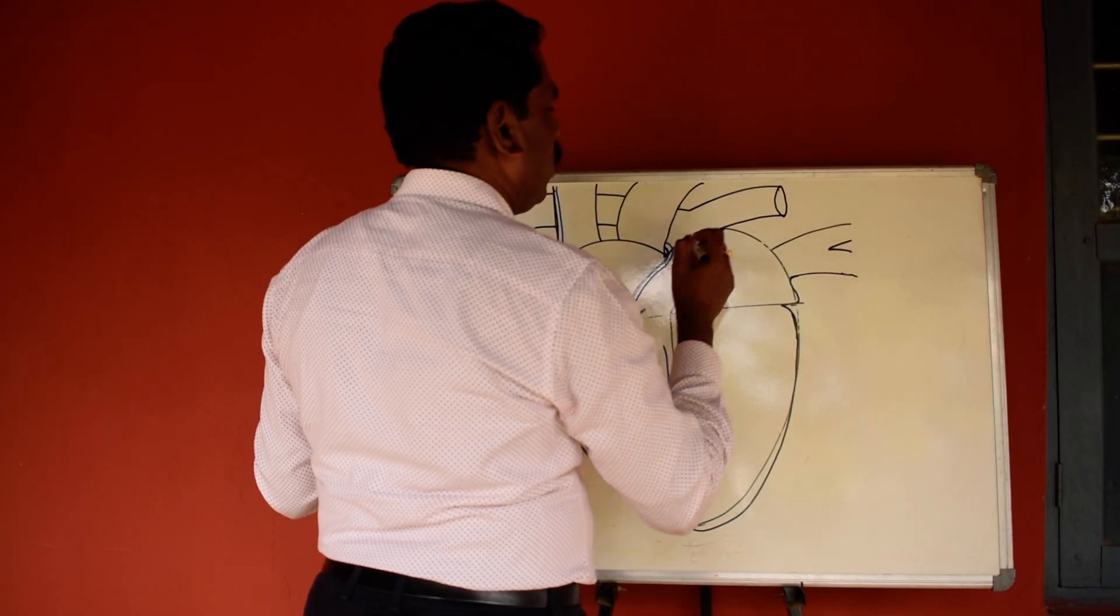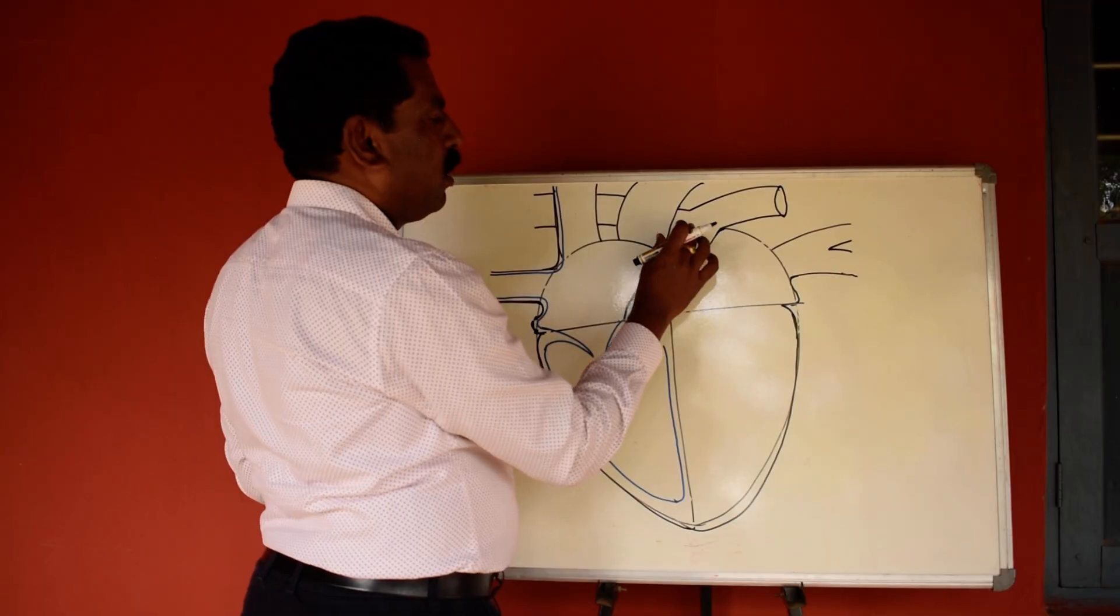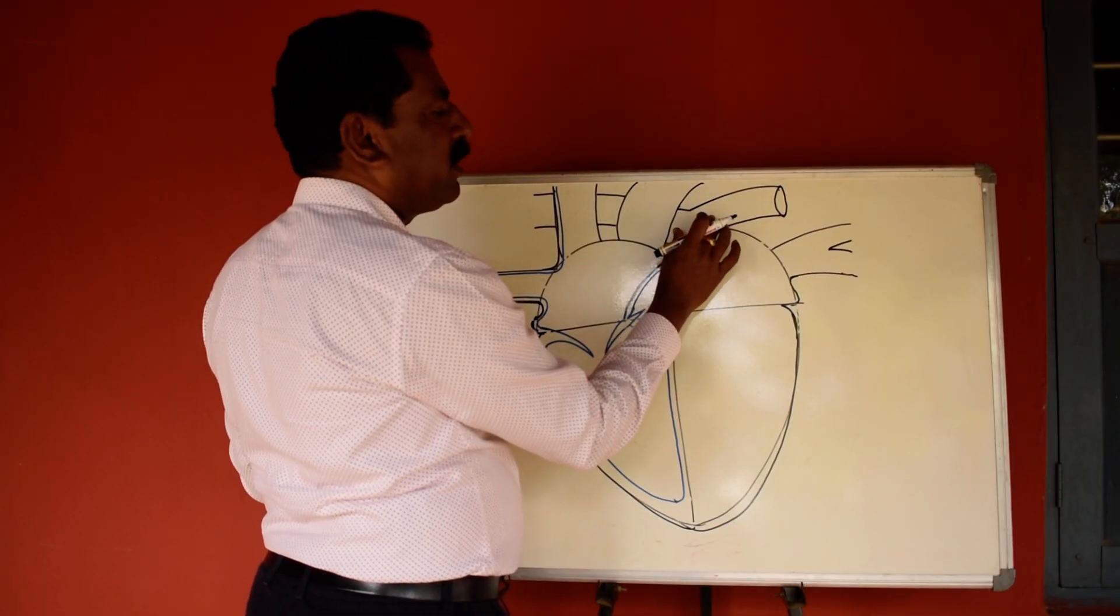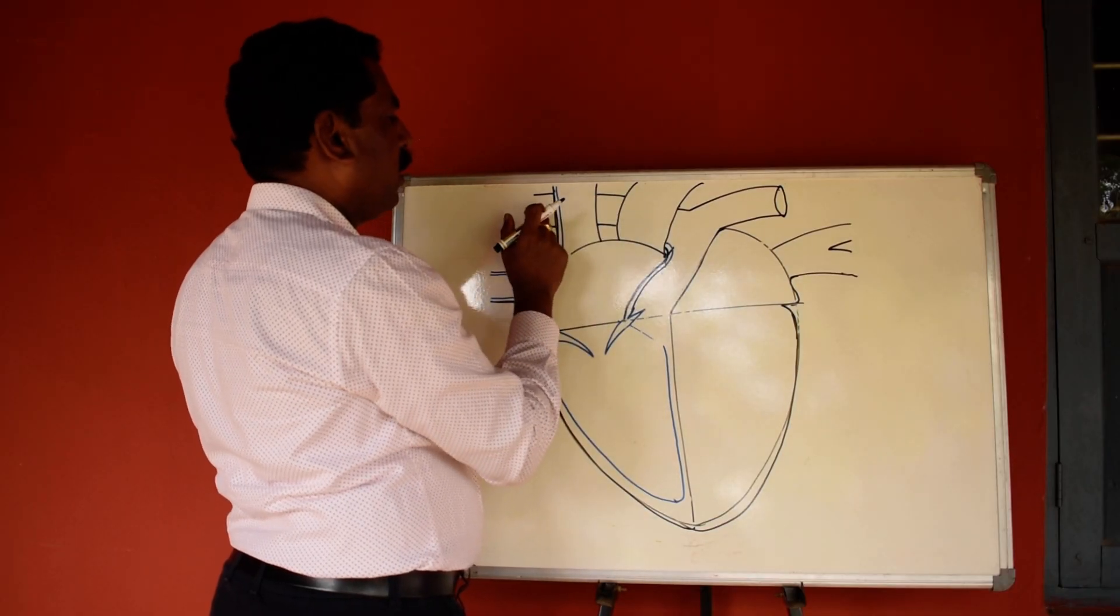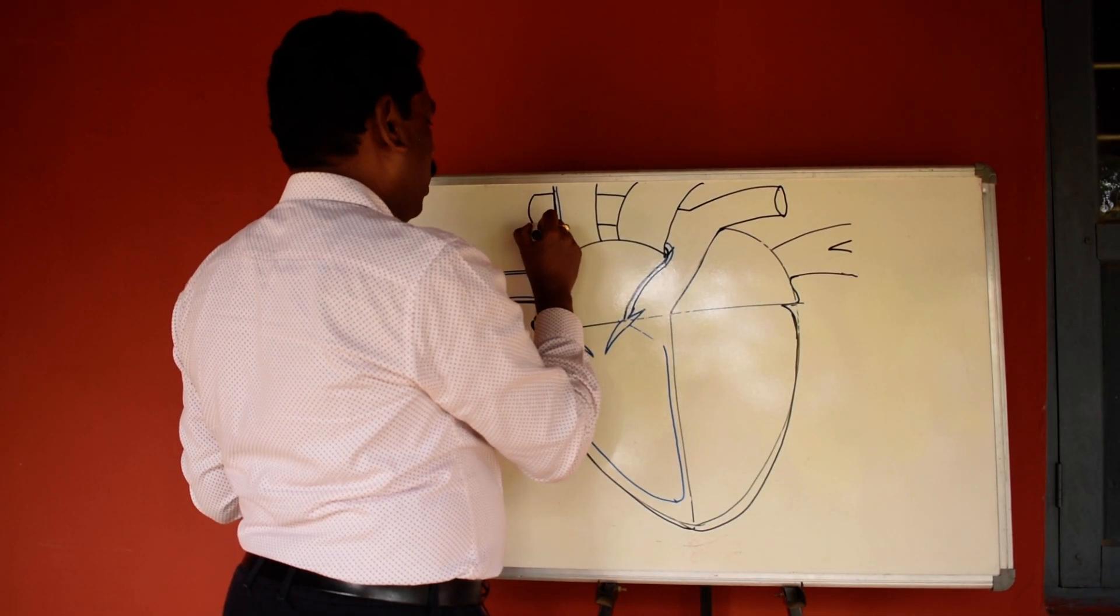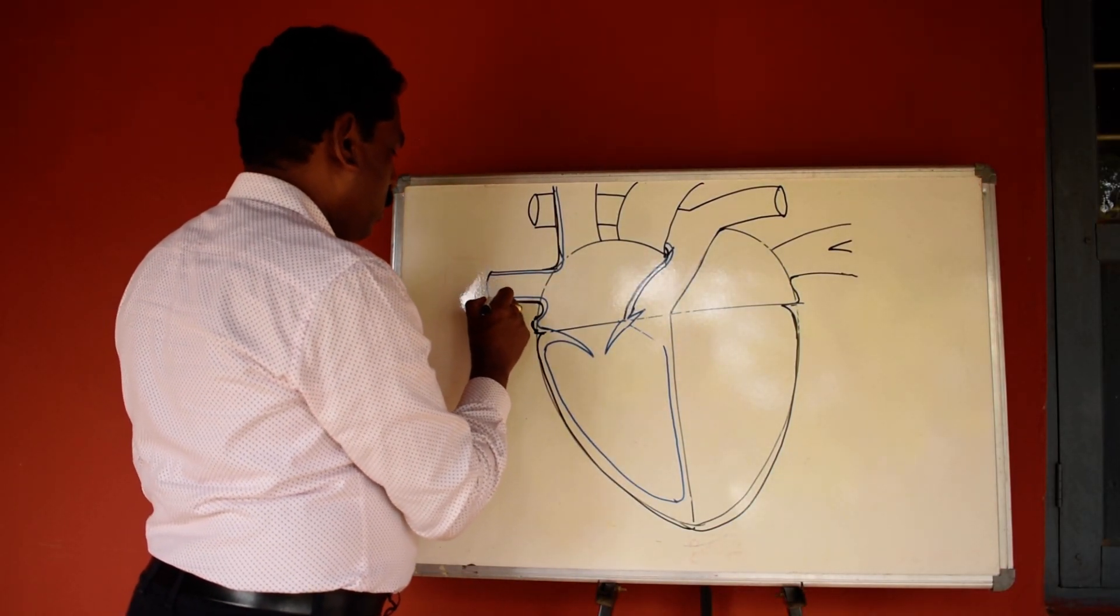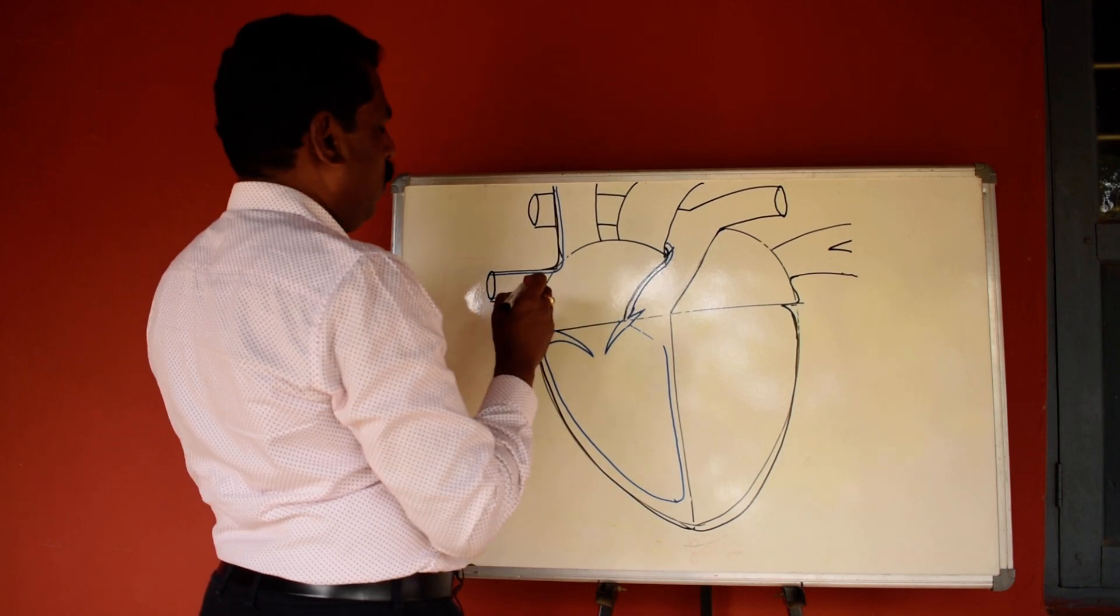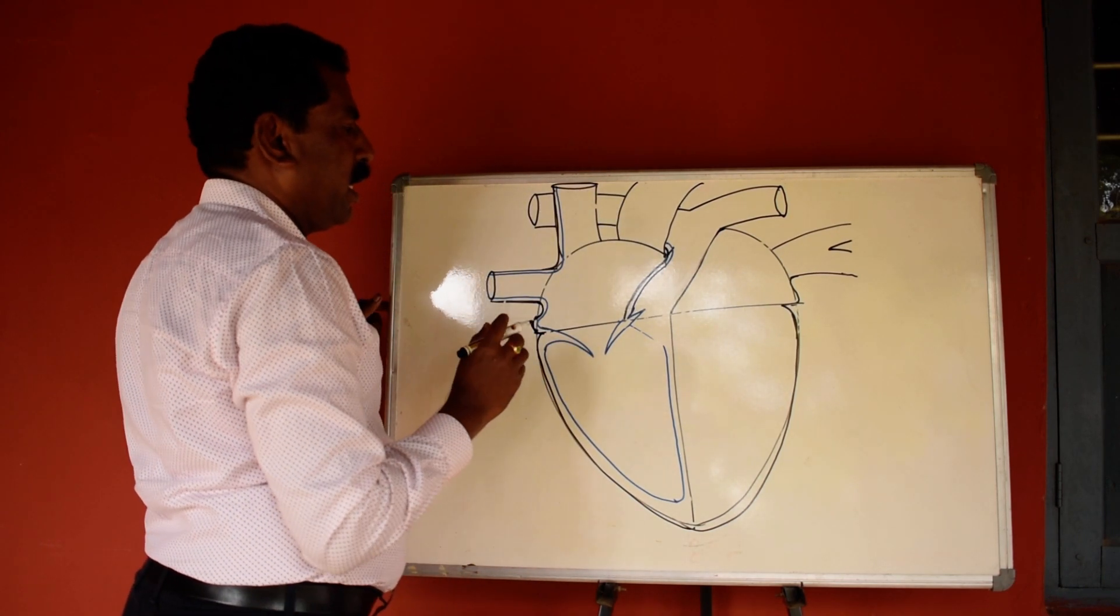So here, pulmonary artery divides into two branches. One goes to left lung, another comes to right lung. So here also I will draw lower vena cava and this is upper vena cava.